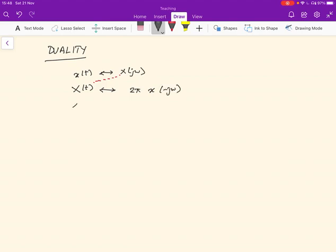And also, x of jt. So here, we're saying we're going to take a complex function of time. This is going to be corresponding to 2π x of minus ω.